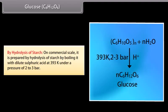By hydrolysis of starch: On a commercial scale, glucose is prepared by hydrolysis of starch by boiling with dilute sulfuric acid at 393 K under a pressure of 2 to 3 bar.